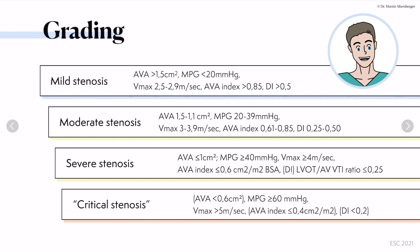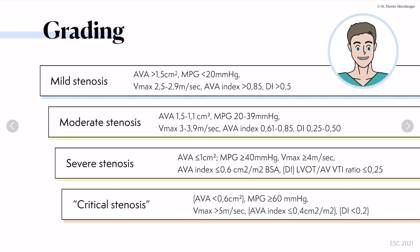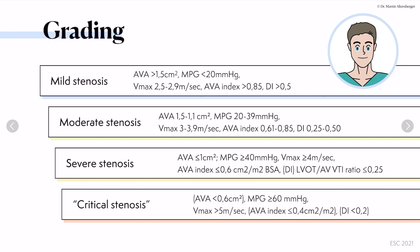For severe aortic stenosis, the aortic valve area is below or equal to one square centimeter, the mean pressure gradient is above or equal to 40 millimeters of mercury, the maximum velocity is above or equal to 4 meters per second, and indexed it would be below 0.6 square centimeters per square meter body surface area.